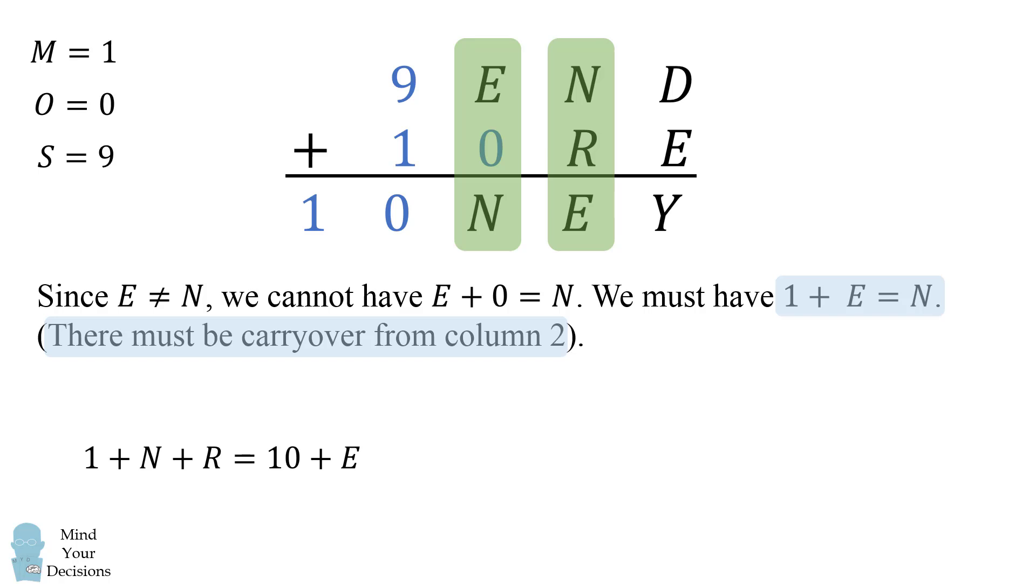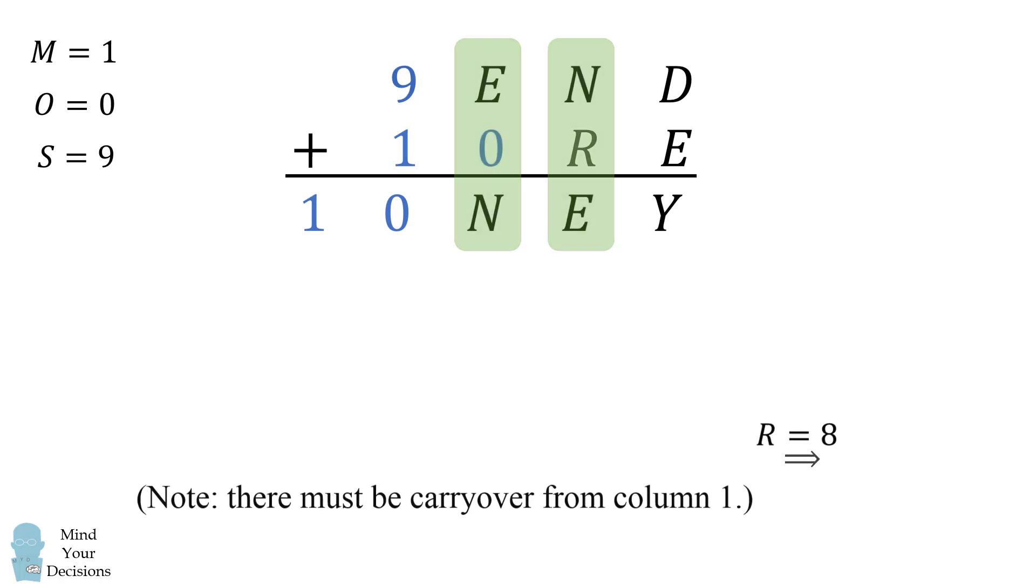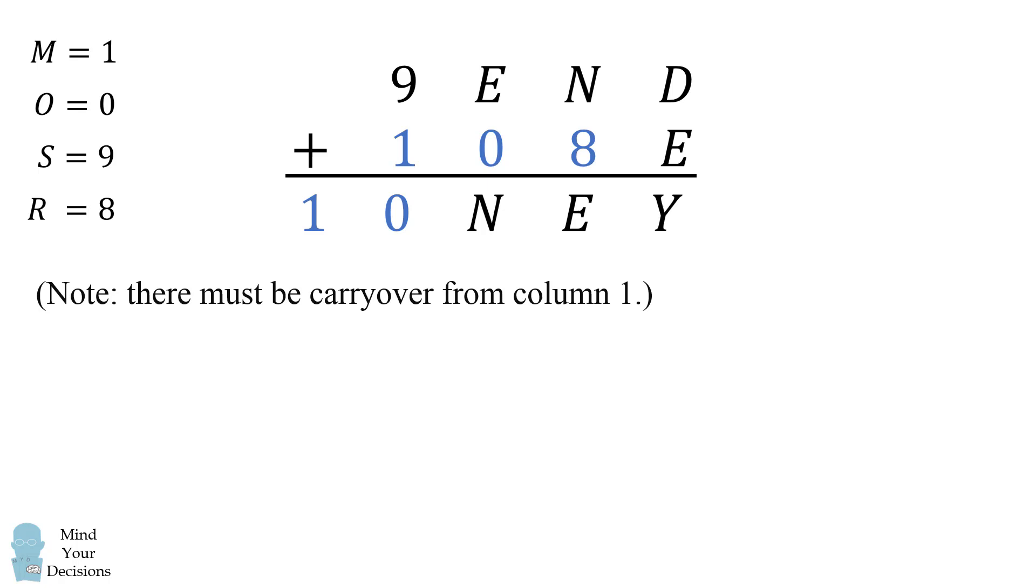So we solve the second case. This implies that 1 plus 1 plus E plus R is equal to 10 plus E, which then implies R is equal to 8. So we figured out another digit. And furthermore, since we're in this case, this means there must be carryover from column 1, because we have 1 plus N plus R. So we'll keep track of all of this, and we have R is equal to 8, and we know that there must be carryover from column 1.